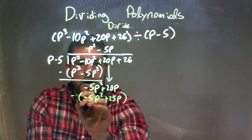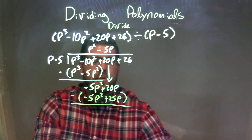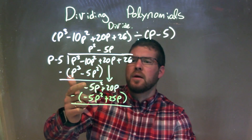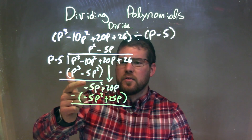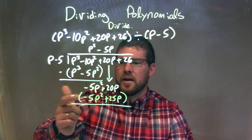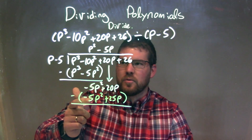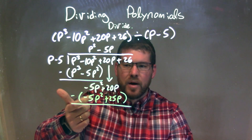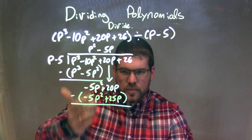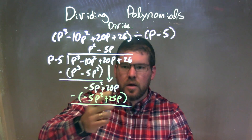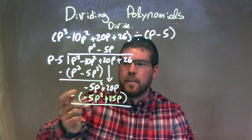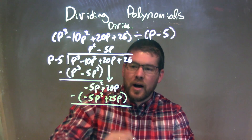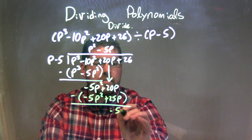I'm going to subtract the two, top and the bottom here. Minus 5p squared minus negative 5p squared gives zero. 20p minus 25p is just minus 5p.